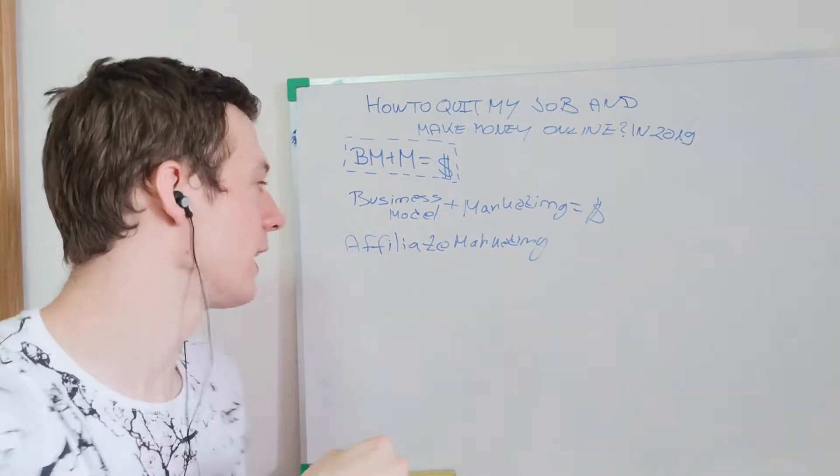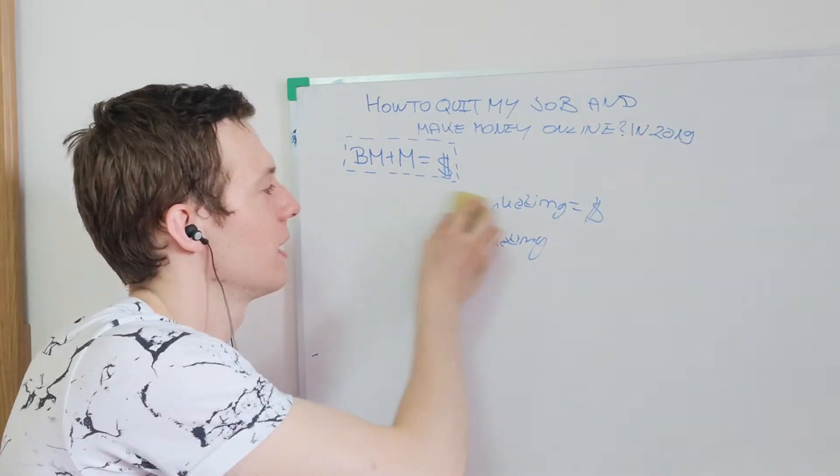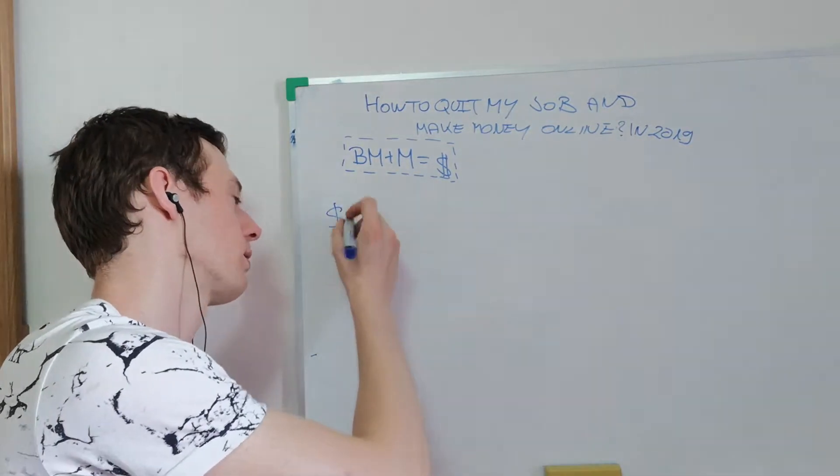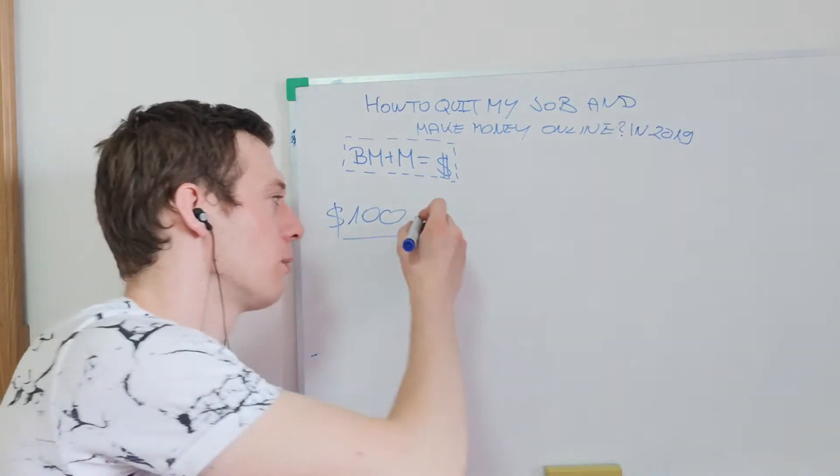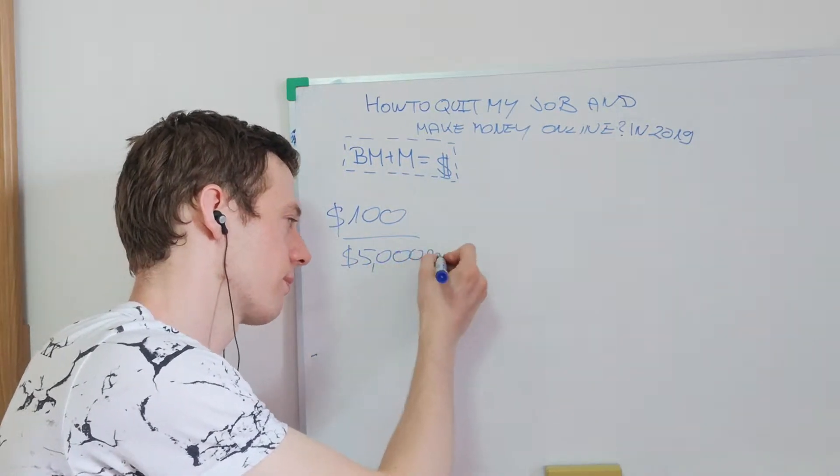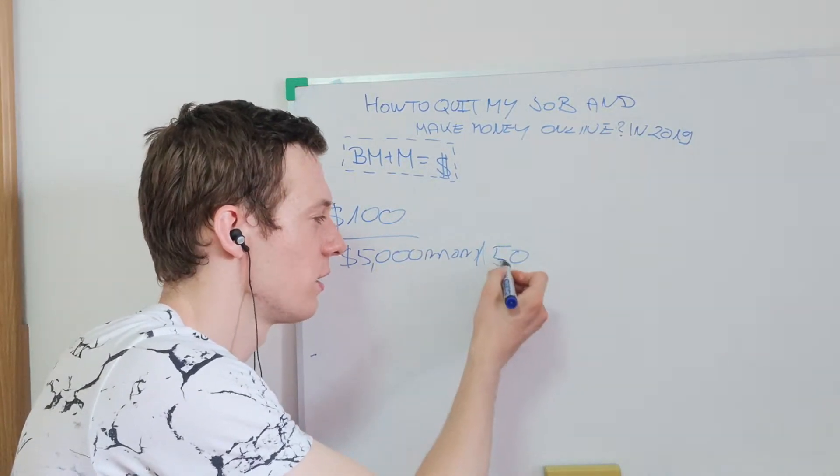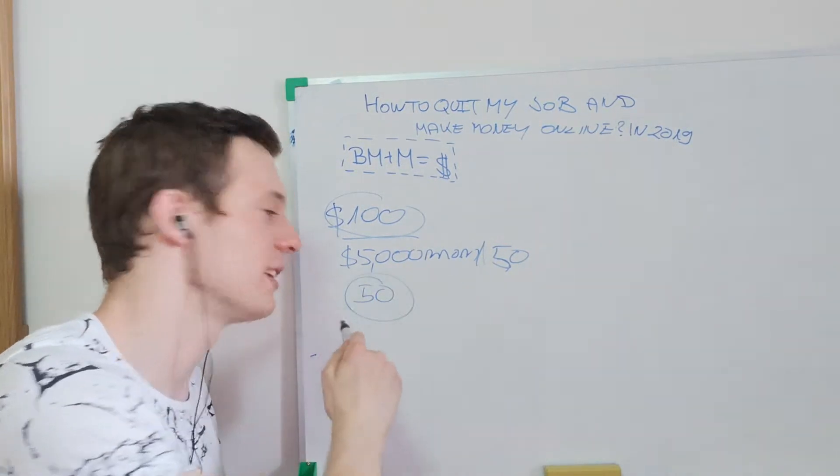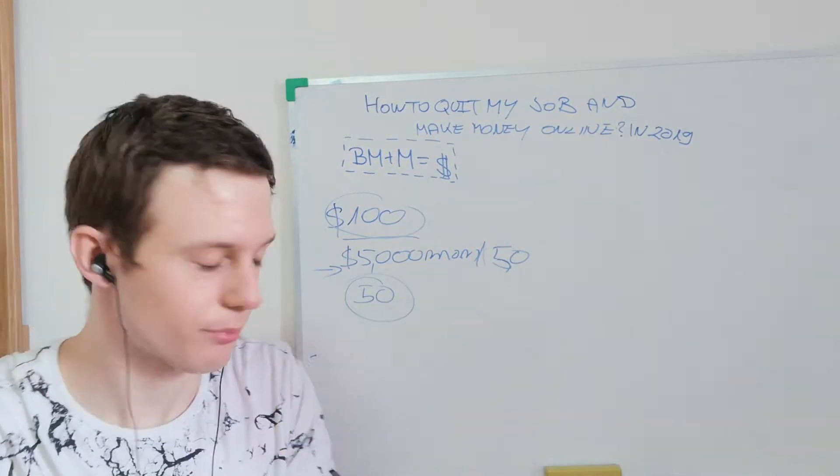Let's say we are promoting a product that is paying us $100 per sale, and we want to make $5,000 per month. All we need to focus on is how many sales we need. We need 50 sales of a $100 product. So all we have to do is focus on getting 50 sales every single month to make $5,000.